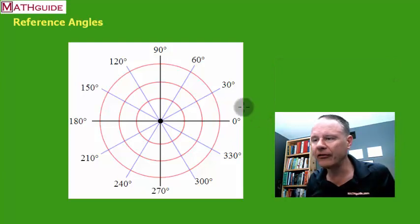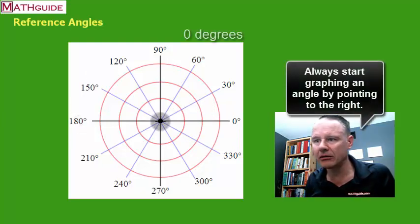Well, first of all, as a little bit of a review, you start by graphing angles using this kind of setup. In other words, a zero degree angle is going to face you directly east in the coordinate plane.